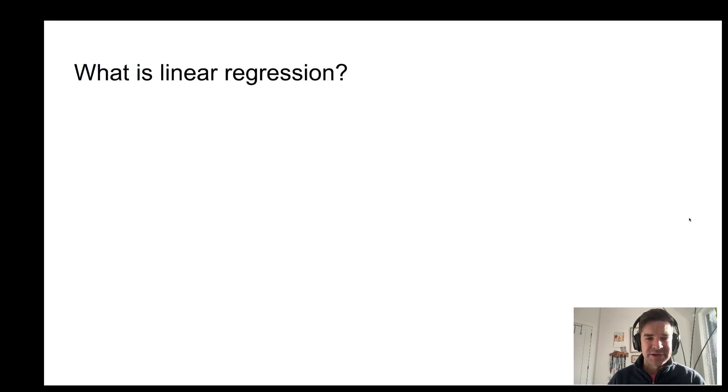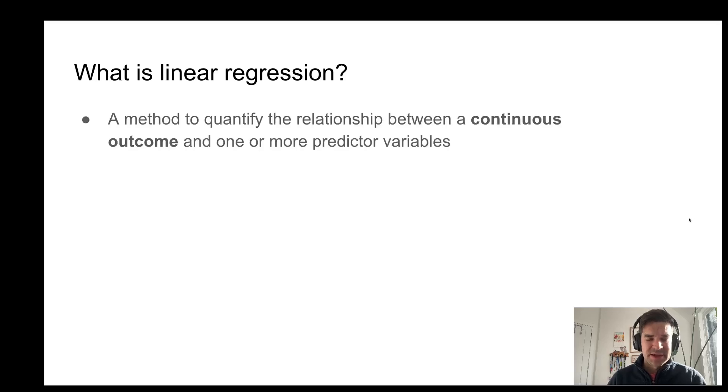So what is linear regression? We can keep it very simple. It's a method to quantify the relationship between some continuous outcome and one or more predictors. Here's a toy example. How does age affect the number of gray hairs?